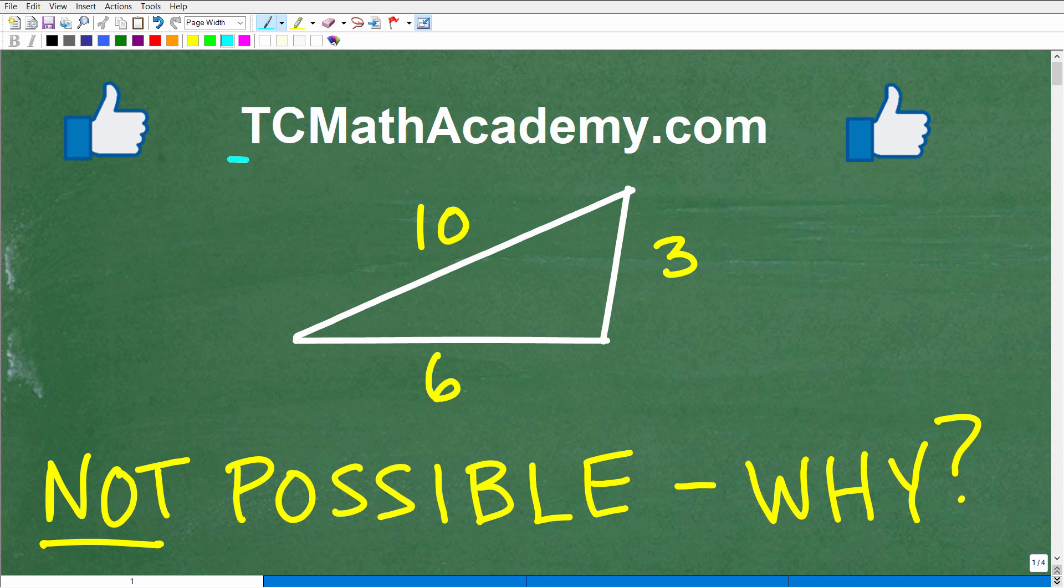Hello, this is John from TC Math Academy, and in this video we're going to be talking about a really interesting and I would call even cool property of triangles. Here is a triangle, or what appears to be a triangle, but I'm saying that this is not possible.